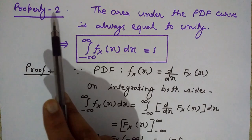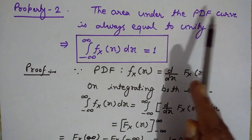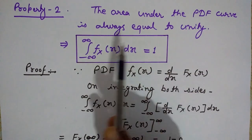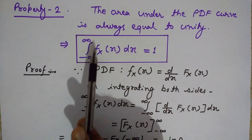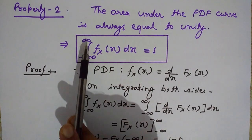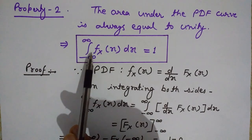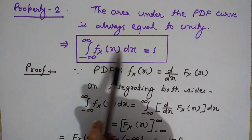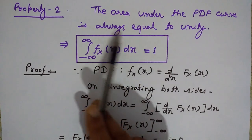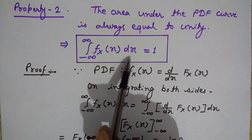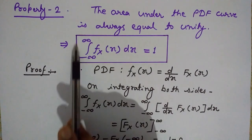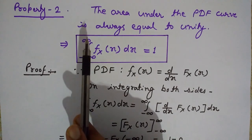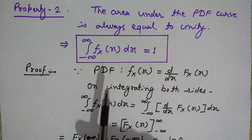Property number 2: The area under the PDF curve is always equal to unity, meaning 1. If we integrate f(x) over the whole range from minus infinity to infinity, the result equals 1: the integral from −∞ to +∞ of f(x) dx = 1. Let's see the proof of why this is equal to 1.